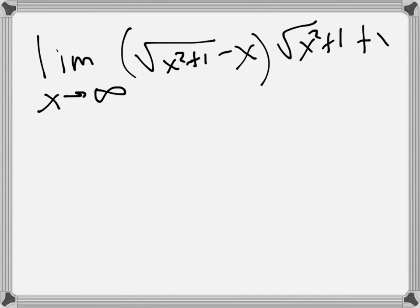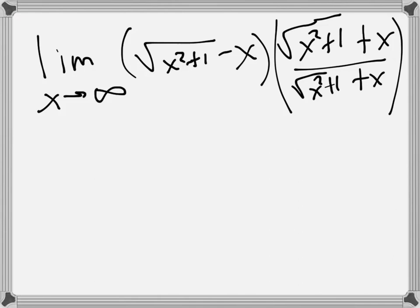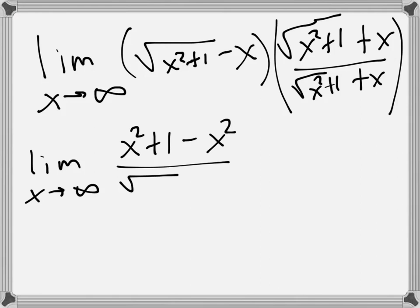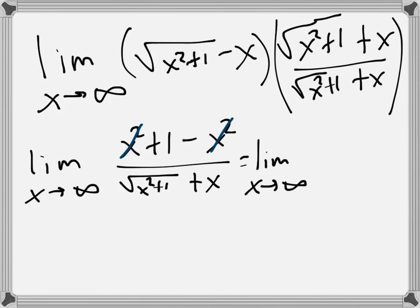The conjugate is √(x²+1) plus x. The advantage of multiplying by the conjugate is that the numerator just becomes a difference of squares: (x²+1) because of the square root squared, and then you subtract x squared. Now you've got this denominator, and the x squareds will cancel. You'll just have 1 over the square root of x²+1 plus x.